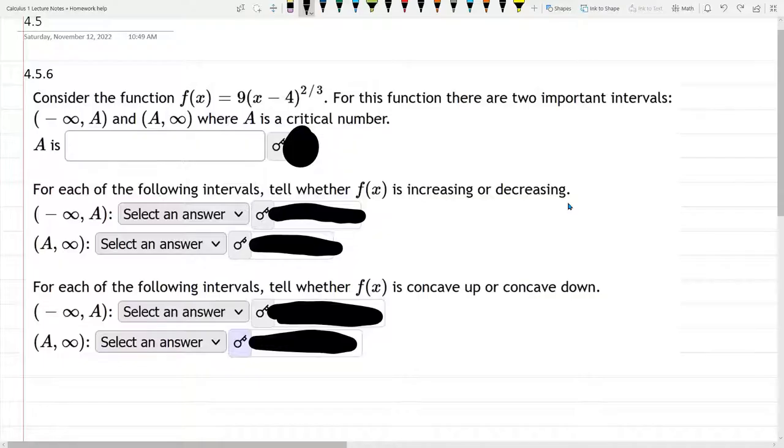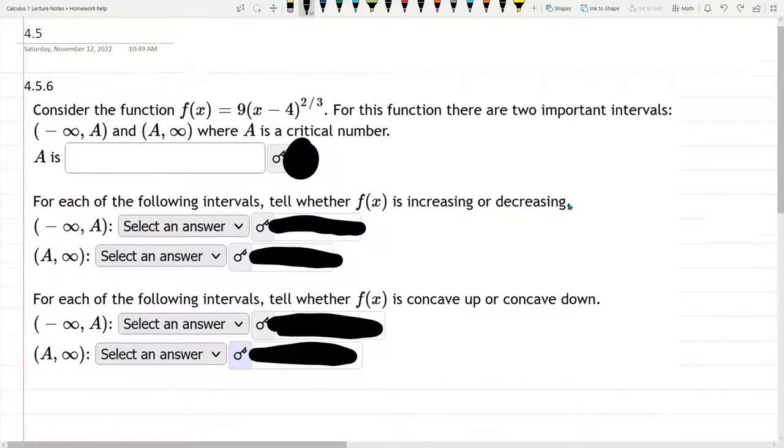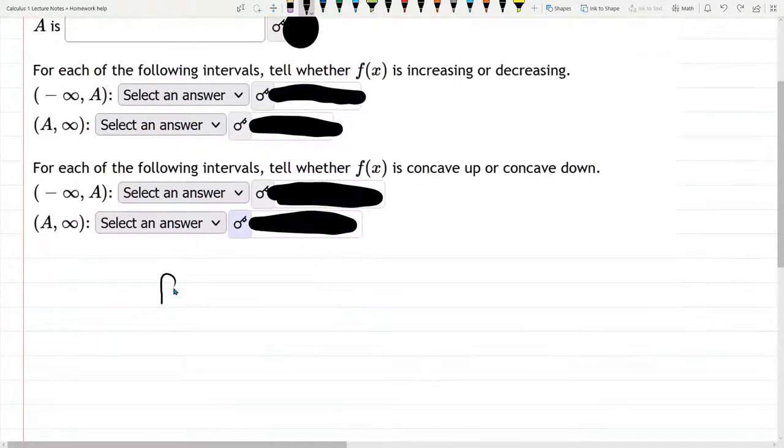In this question, we're given a function 9 times x minus 4 to the two-thirds power. So let's write that down.